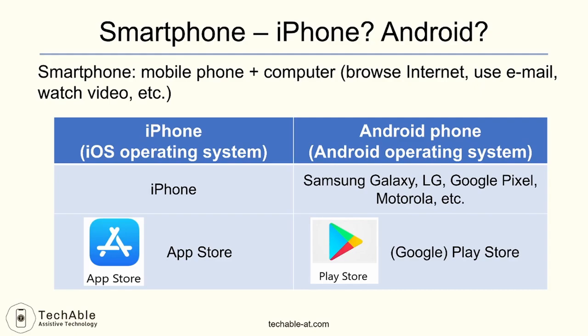Simply, you can put the smartphones in the market into two groups: iPhone and Android phones. It's based on what operating system — just think of it like an engine of a car — the phone is using in order to run the internet or email program on the phone. The iPhone uses an engine called iOS, and most of the other smartphones use an engine called Android.